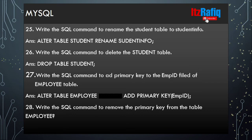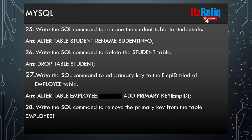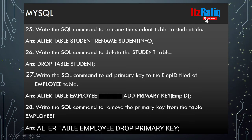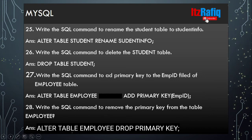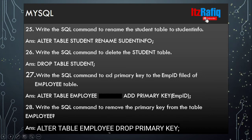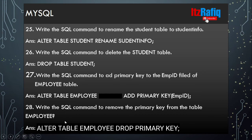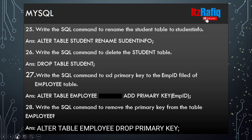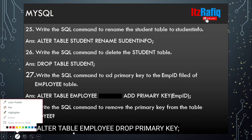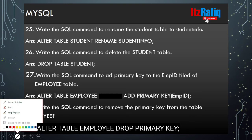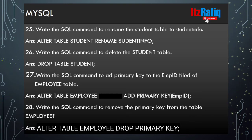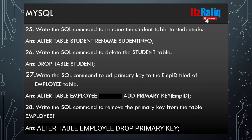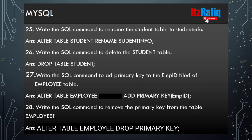Then write the SQL command to remove the primary key from the table employee. It will be ALTER TABLE employee DROP PRIMARY KEY. Note: those were two silly mistakes — it should be employee, and the student word is not required in that command.